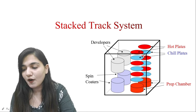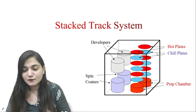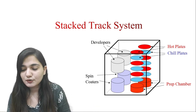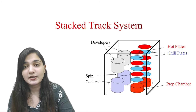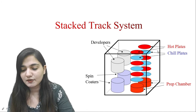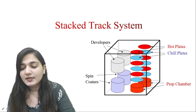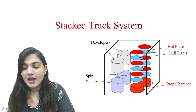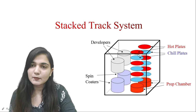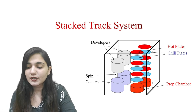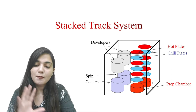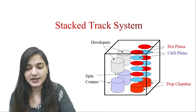We have two preparation chambers, two spin coaters, two developers, two hot plates, and two chill plates for each and every step. In the preparation chamber we have the pre-exposure bake, then it moves to the spin coater, then to the soft bake, then towards the developer solution, then to the hard bake. Before the developer solution we also have the post exposure bake. All these processes are happening in the stack track system.